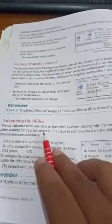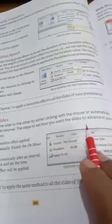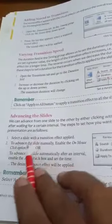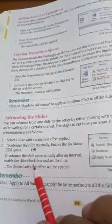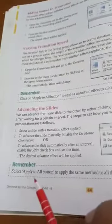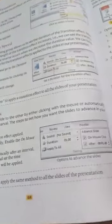Next topic: advancing the slides. We can advance from one slide to another by clicking with the mouse, or automatically after waiting for a certain time interval. To advance the slide manually, enable the On Mouse Click option. To advance the slide automatically, enable the After checkbox and set the time. Select Apply to All to apply the same method to all slides. For example, I have selected 12 seconds — after 12 seconds the slides will automatically advance.